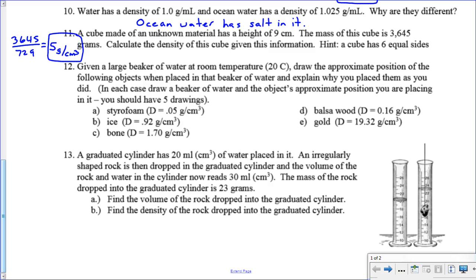This next one wants me to draw a picture of a beaker with these five things in them. What I'm going to do is the things that have a density less than water, and water is 1.00, the things that have a density less than water would float, and the things that have a density more than water are going to sink. You can see in this picture, styrofoam, balsa wood, and ice, those all have densities that are less than water, so those will float, whereas gold and bone are more dense than water, so those two things will sink.